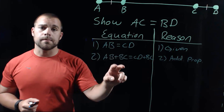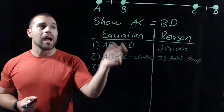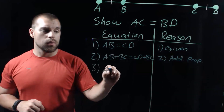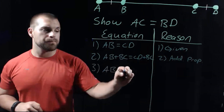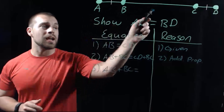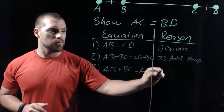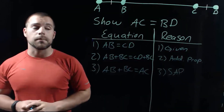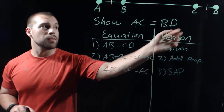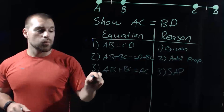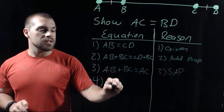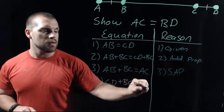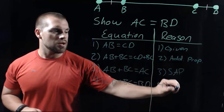Now let's look at AB plus BC more closely. We're adding two small segments together, and when we do that it creates a bigger segment. So AB plus BC equals the big segment AC — that's our segment addition postulate. Similarly, CD plus BC gives us the bigger segment that runs from B to D, and again that's our segment addition postulate.